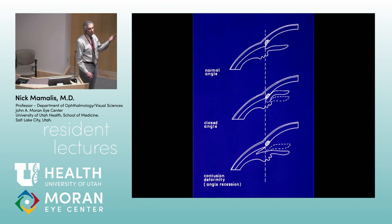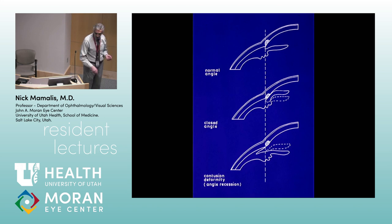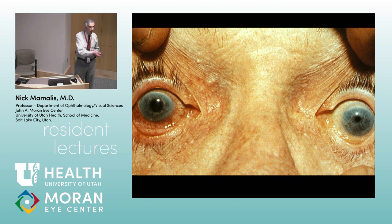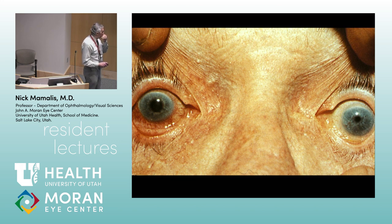We've talked about open-angle glaucoma — primary and secondary. We can get closed-angle glaucoma where the angle is blocked off, and we can also get angle recession where the angle actually tears loose. Here we're looking at the right eye, which is injected and has a pupil in a mid-dilated state. What would you be concerned about? Angle closure.